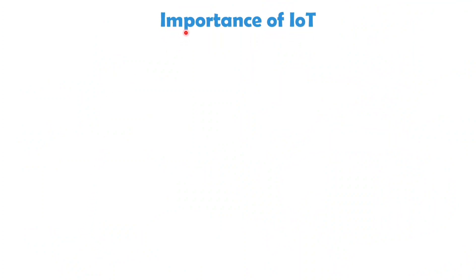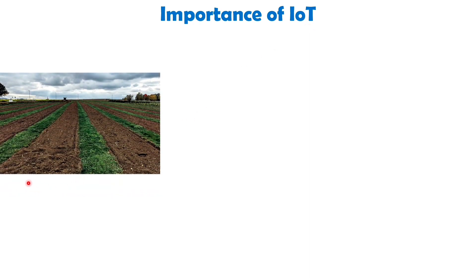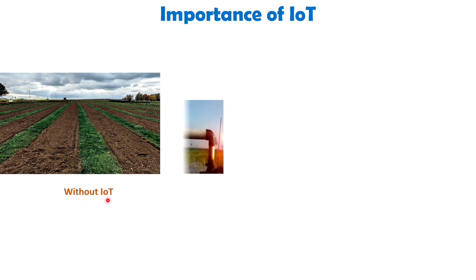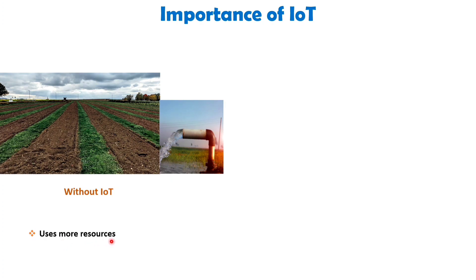Before we understand the technical definition of IoT, let's understand the significance of IoT through an example in agriculture. Imagine an agriculture field without IoT capabilities, where devices like pumps, motors, and sprinklers are manually operated. As a consequence, this traditional approach consumes excessive resources, requires more time, and ultimately reduces farm yield.